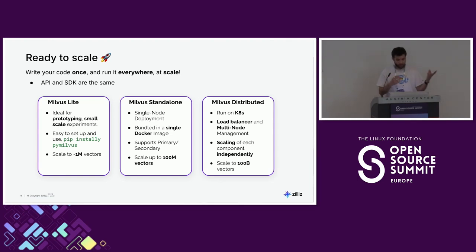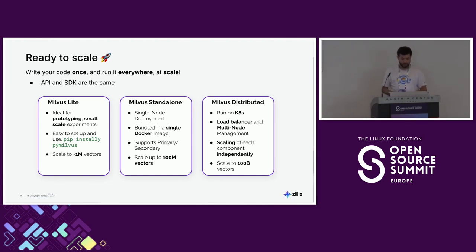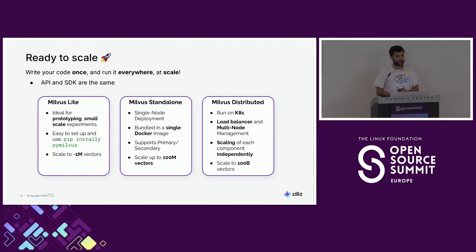We basically offer everything you need. You just write your code once, and the API and SDK are the same for all deployment tiers. You just change your URL to point to your cluster, and you're accessing Milvus Distributed. That's it.